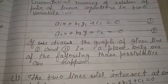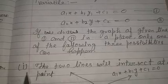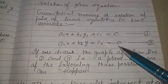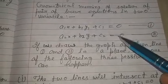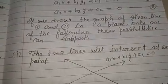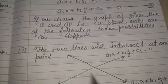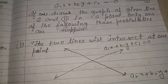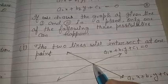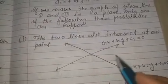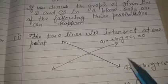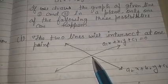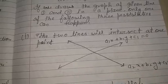First possibility: the two lines will intersect at one point। जब equation first और second का graph draw करेंगे, तो वो दोनों lines graph paper पर intersect करेंगी। अगर intersect करेंगी, तो उस intersection point का जो coordinate होता है, उसमें x-coordinate, x की value होती है और y-coordinate, y की value होती है — जो इस equation को satisfied करेगा। इस case में equation का unique solution मिलता है।